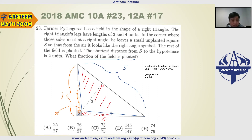Now we calculate the area of the small square. The area of the square is x squared, which equals (2/7) squared, giving 4/49.